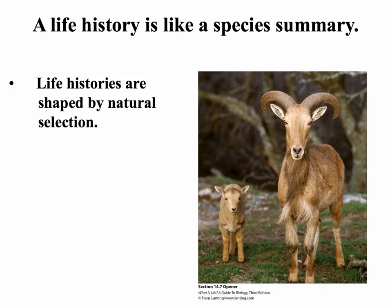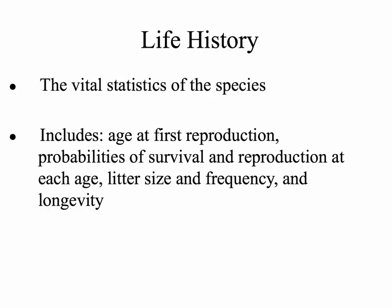Because of this, there is no one right answer to the way an organism lives and survives. Life histories are going to include a summary of information about an organism's reproductive strategies, how often they reproduce, when they reproduce in their lifetime, and their survivorship. Life history includes vital statistics of the species.